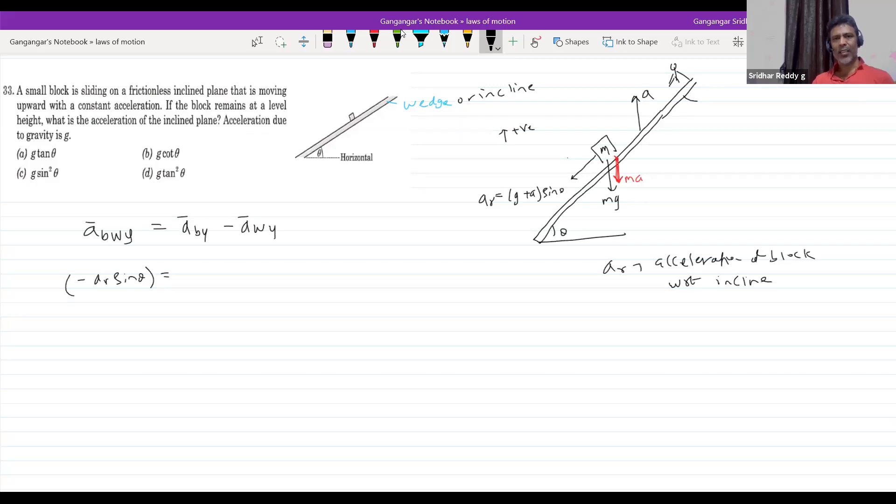I'm still asking: if the block remains at a level height, what do you mean by that? With respect to ground it will not change its position, so the acceleration of the block should be zero. Therefore I'll write this is zero.